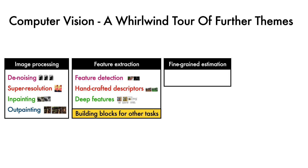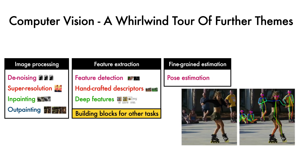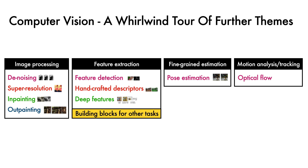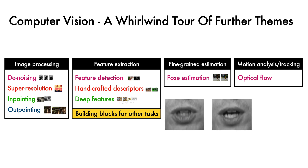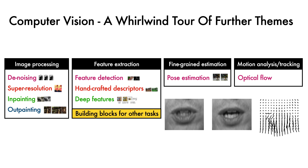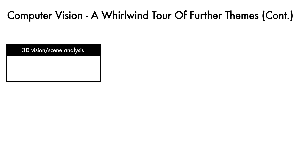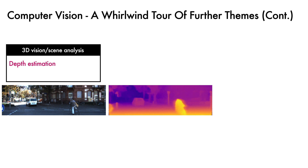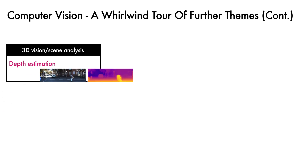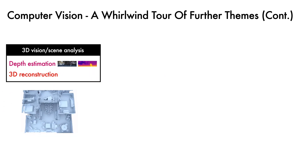We then have more fine-grained estimation tasks, like human pose estimation, where we start from an image of people and try to estimate the locations of joints that determine their pose. We also have tasks for motion analysis and tracking, like optical flow estimation, where we are given two consecutive input frames in a sequence and our goal is to estimate the 2D motion that has taken place between them. Another big topic is 3D vision and scene analysis, including depth estimation — where we take in one or more images and aim to estimate a depth map, a task crucial in self-driving — as well as ambitious tasks like 3D reconstruction, where vision algorithms are used to build a 3D model of a scene.